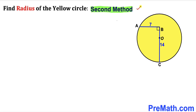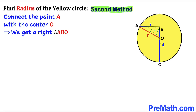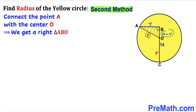Now for the second method. We connect point A with center O to get right triangle ABO, where AO is the radius r. OC is also radius r, so the length OB is 14 minus r. The three sides of right triangle ABO are r, (14 minus r), and 7.